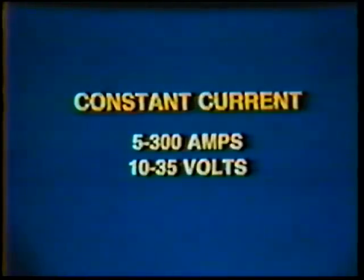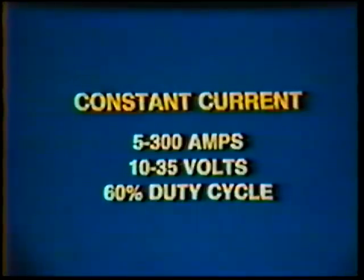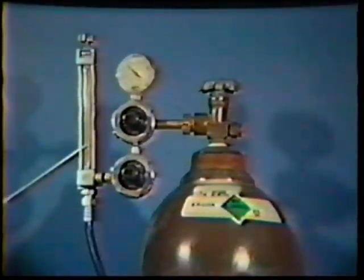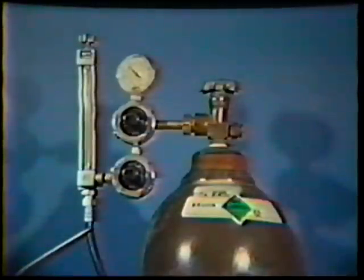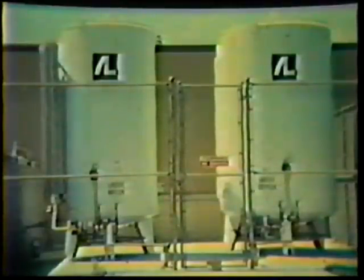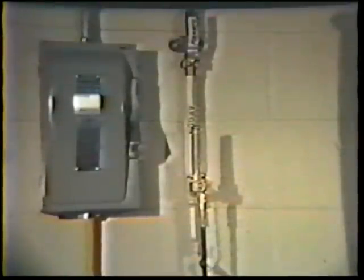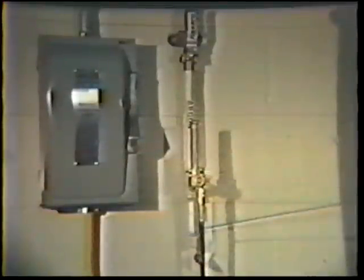A typical gas tungsten arc machine operates within a range of 5 to 300 amps, 10 to 35 volts, at a 60% rated duty cycle. The shielding gas supply is stored in high-pressure cylinders and is delivered through a pressure regulator, flow meter, valve, and hoses. In high-volume applications, the shielding gas may be stored in a bulk storage tank and piped to a number of separate welding stations. At the stations, the shielding gas is delivered to the torch through a flow meter, valves, and hoses.